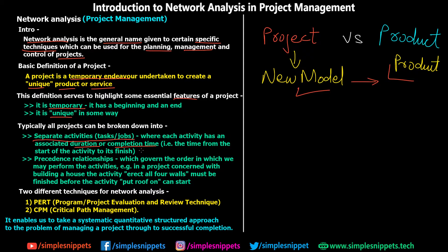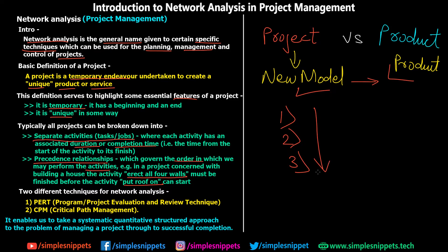Projects also have a precedence relationship — a set of activities performed in a particular order. For example, in building a house you must erect the four walls before putting on the roof. You follow the order 1, 2, 3 and cannot jump to activity 3 before completing 1 and 2. There is a dependency criteria.